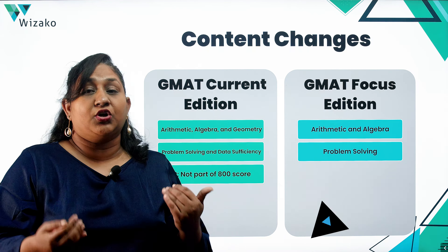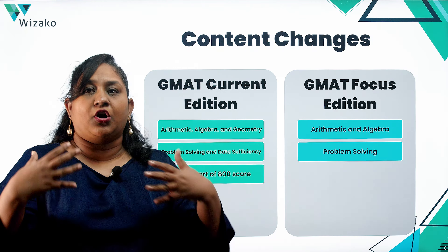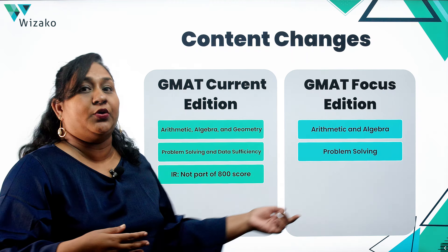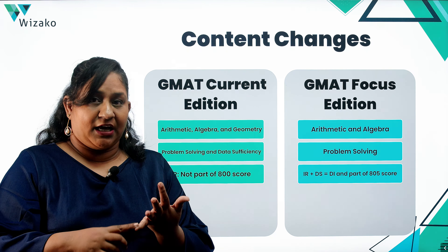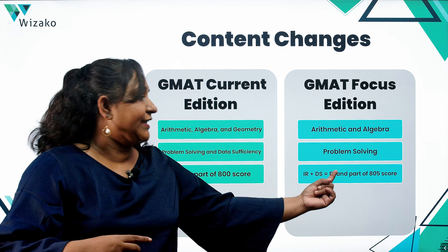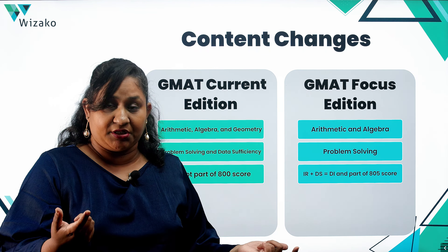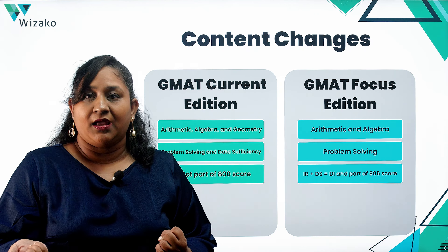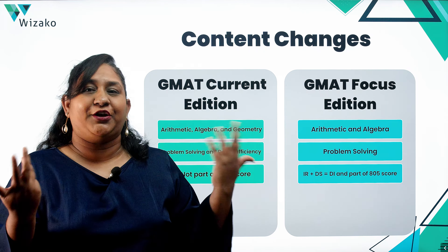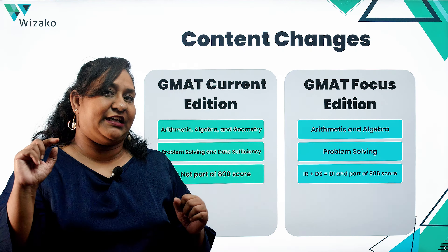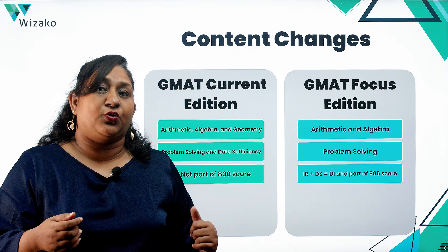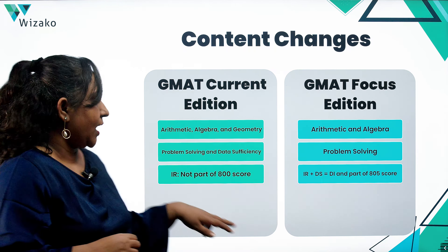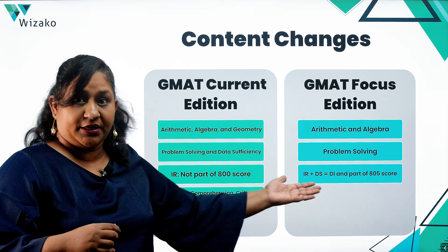In the current version, the Integrated Reasoning section is not part of your 800 score — it is a separate score on a scale of 1 to 8, with only Quant and Verbal contributing to your 800 score. In the Focus Edition, IR combined with data sufficiency is being rebranded as the Data Insights (DI) section, which carries one-third weightage toward your score. The new maximum score is 805, not 800, so scores ending in 5 immediately identify a Focus Edition result.